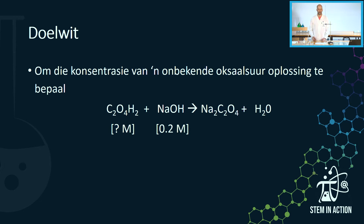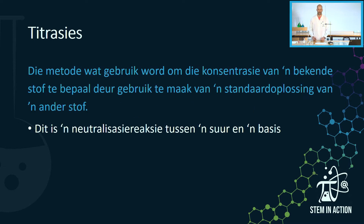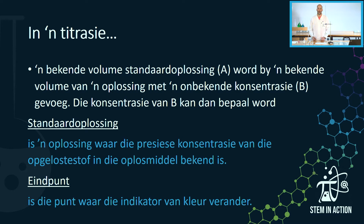The key concept for the titration is to determine the concentration of an unknown substance. Titration (Titratie) is a method used to determine the concentration of an unknown substance through the use of a standard solution of another substance. It is a neutralization reaction between an acid and a base. In a titration, a known volume of the standard solution is added to a known volume of a solution with an unknown concentration, and the concentration can then be determined.